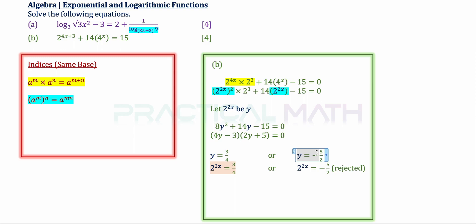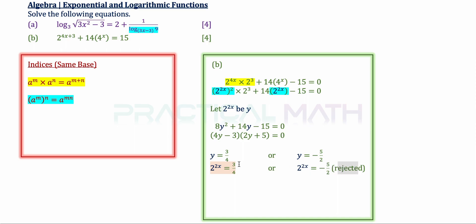But y was introduced as a substitution — we need to solve for x. Changing back y to 2 to the power of 2x gives 2 to the power of 2x equals 3/4 or negative 5/2. Since an exponential function must be greater than 0, we reject the negative solution, leaving only 2 to the power of 2x equals 3/4.